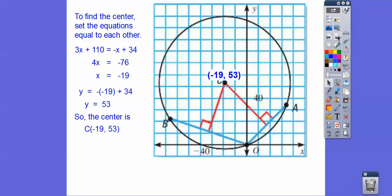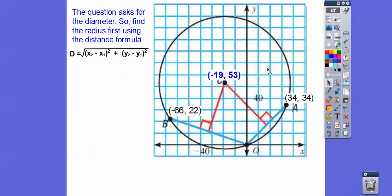So there's our center right there. Now the question's asking us to find the diameter. So we're going to use the good old distance formula with this point, the center, and either this point or this point, or I like the origin right here, zero, zero. So we'll use the origin right there to get the radius.